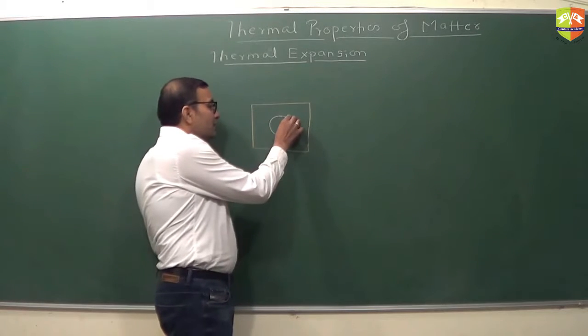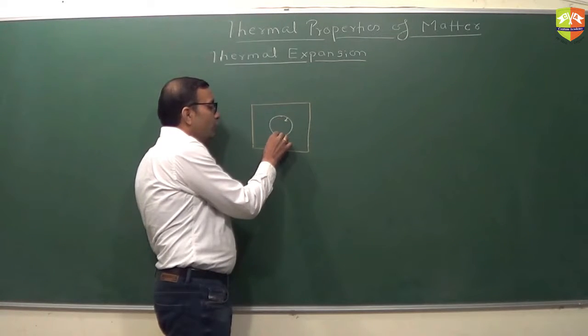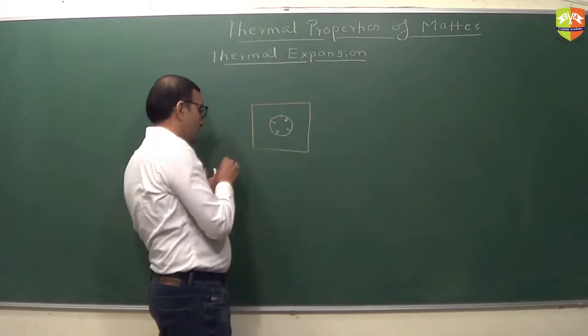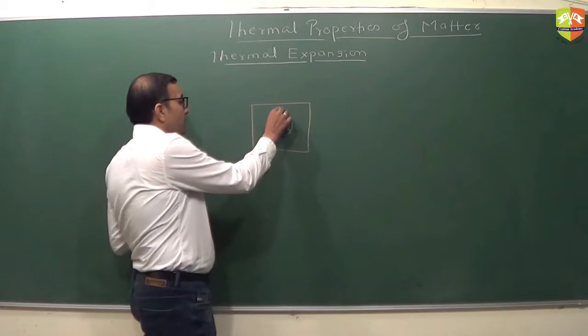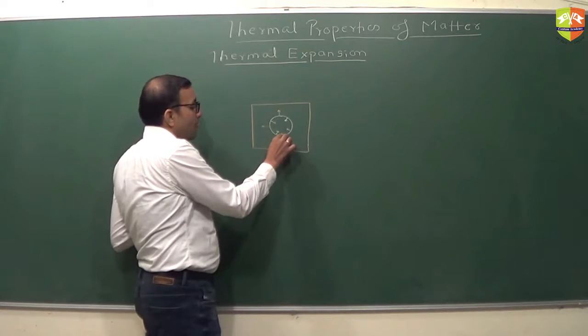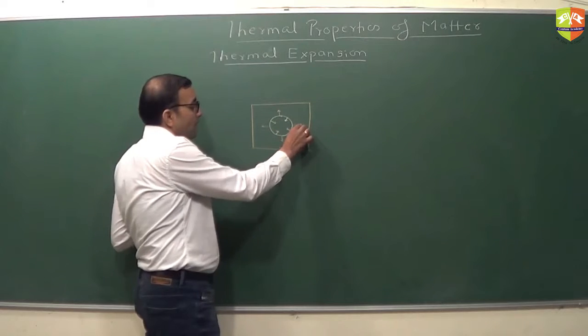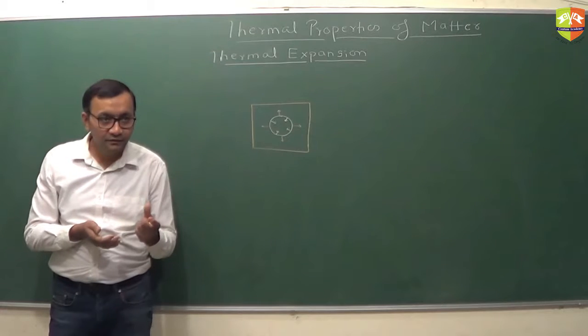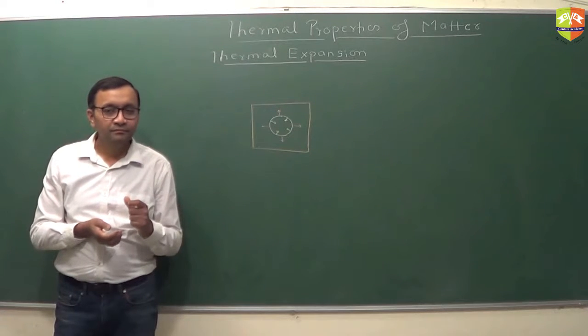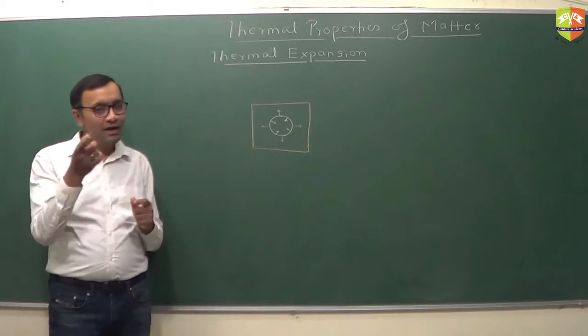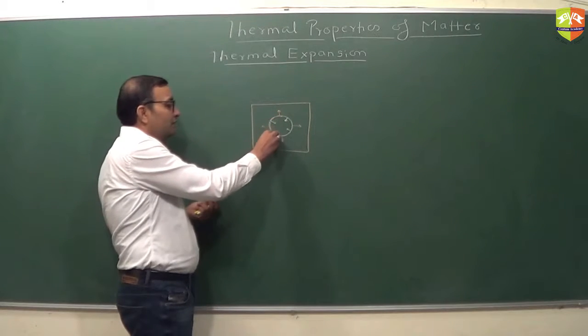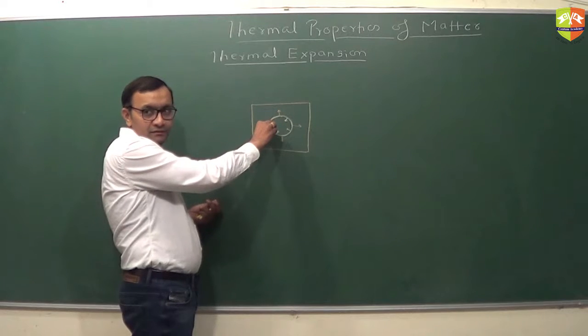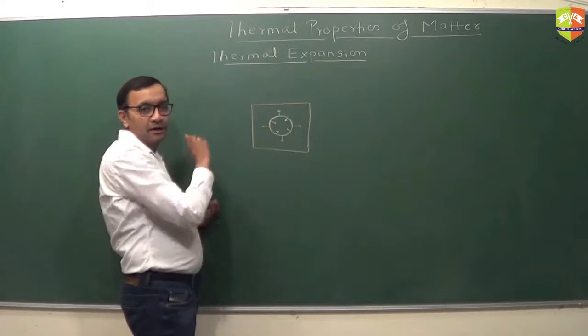My question is, is the material trying to occupy this empty space or it will simply move out? Which one? It will increase. Why? 2 pi r will increase because that's the perimeter of the circle. That has a linear dimension. That will increase. And automatically the diameter increases.